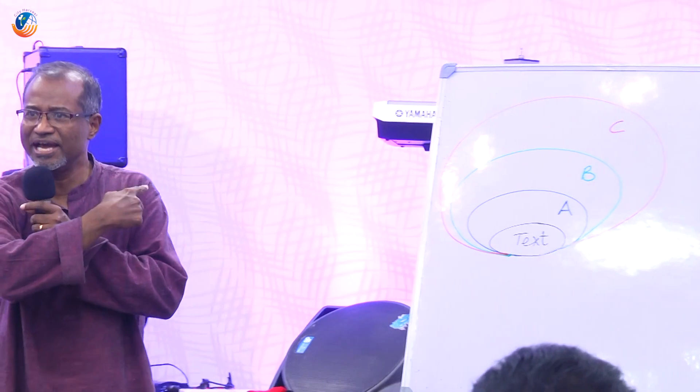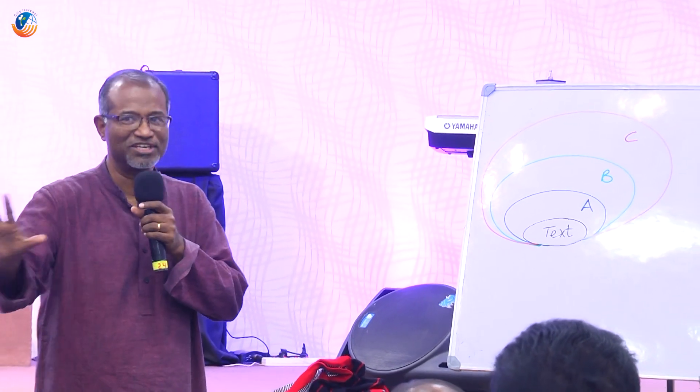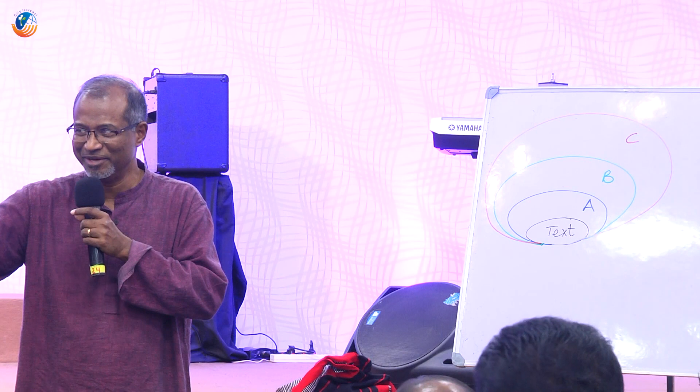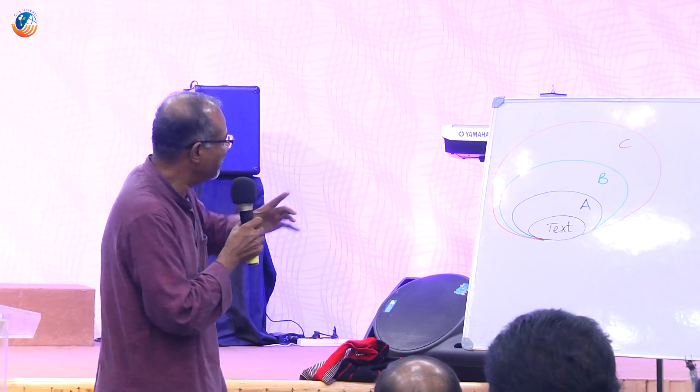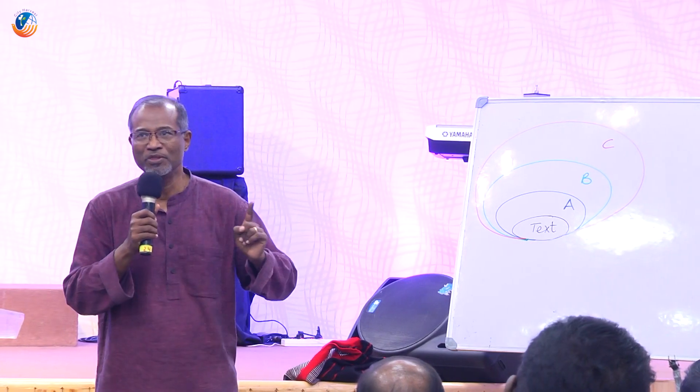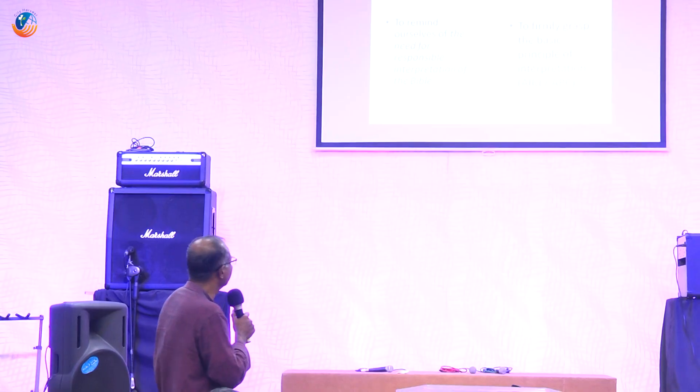Is that a difficult diagram to understand? That's all we want to learn today — what those A, B, C etc. are. That's what we're going to learn today when we deal with the text of scripture: apples, bananas, and coconuts. The first thing we are going to look at...